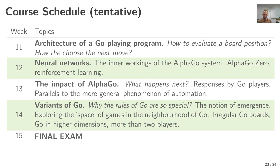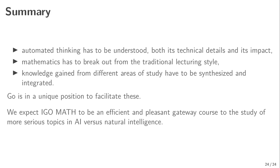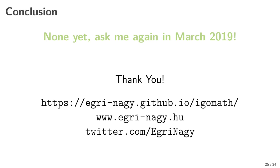In summary: automated thinking must be understood — its technical details and its impact are both very important. We have trouble with mathematics, and it has to break out from the traditional lecturing style, because that just doesn't work anymore. The interesting question is how knowledge from different areas of study can be synthesized and integrated. I think Go is in a unique position to facilitate this, and we expect this course to be an efficient and pleasant gateway to the study of serious topics in AI versus natural intelligence. No conclusion yet — please ask me again in March 2019 when the first semester is finished. Thank you very much.